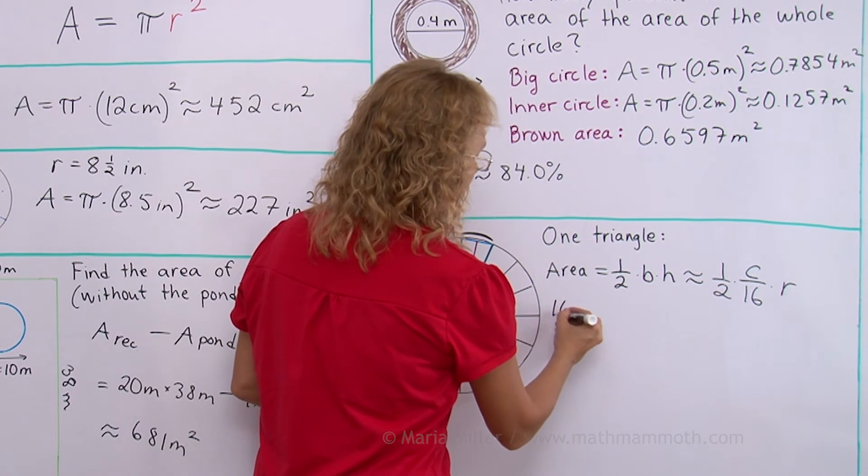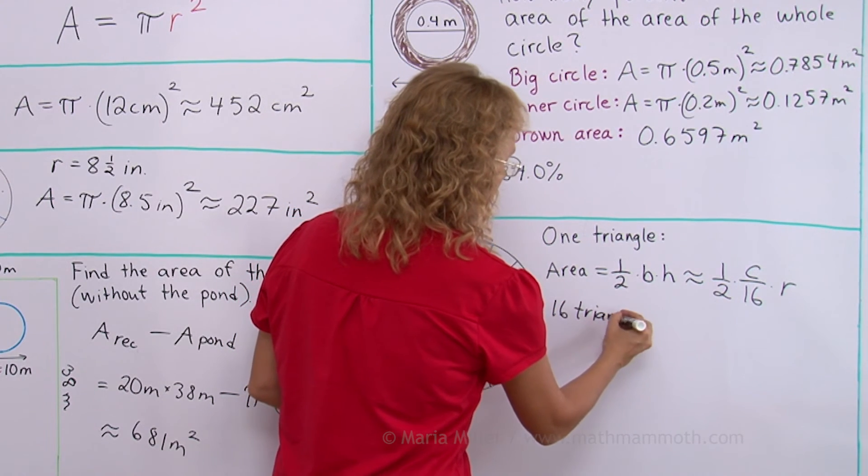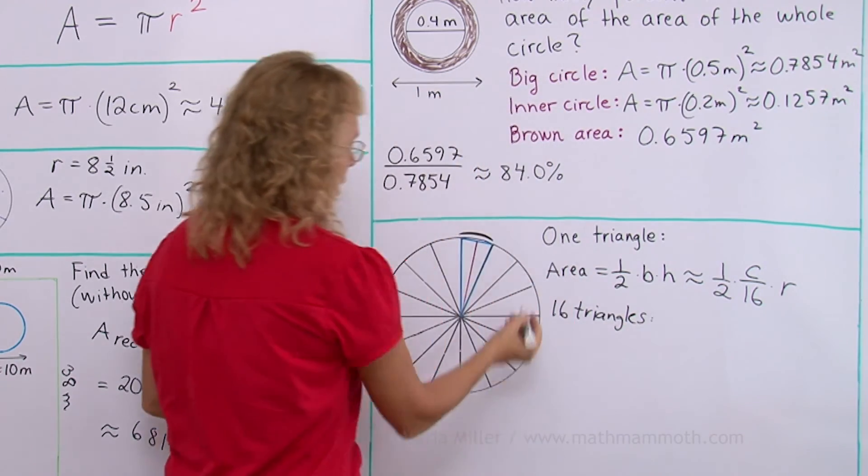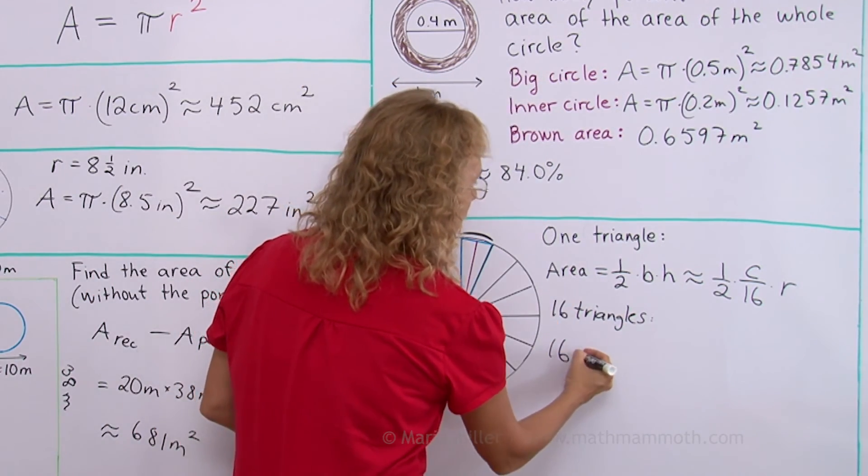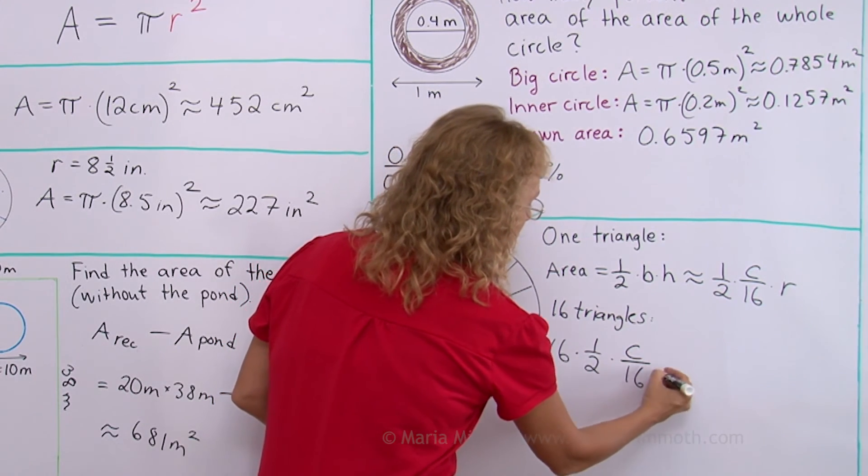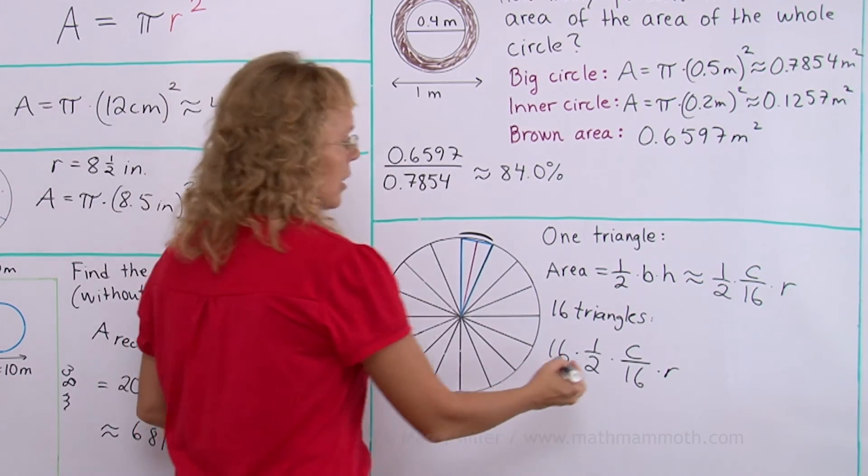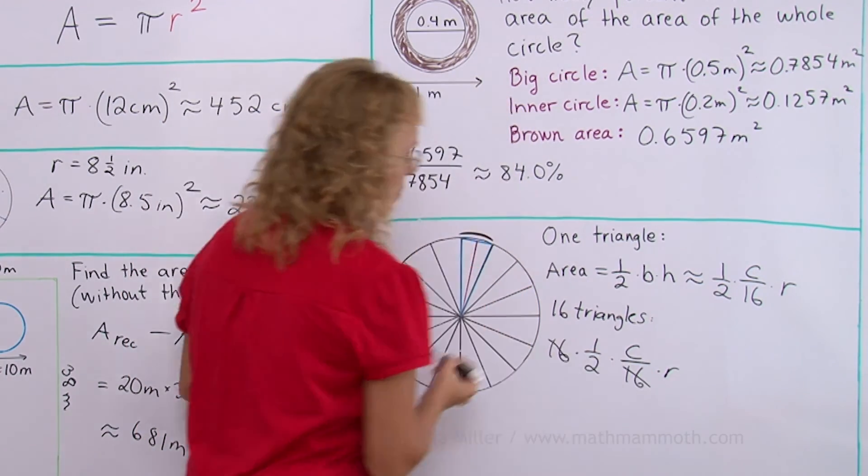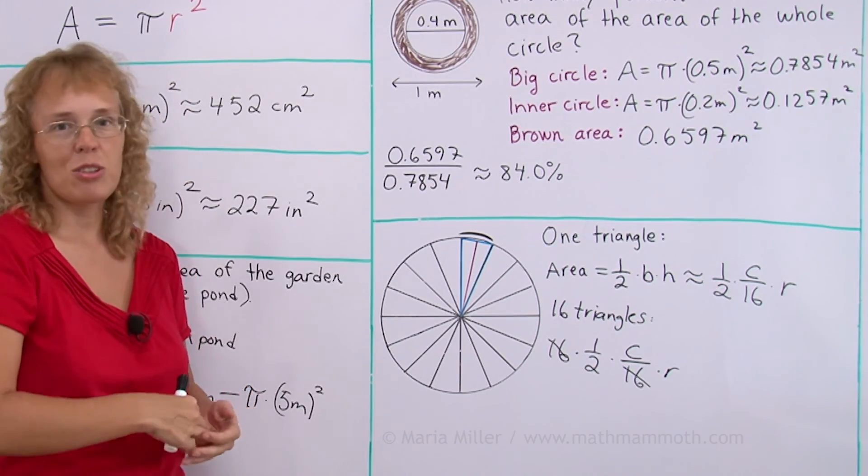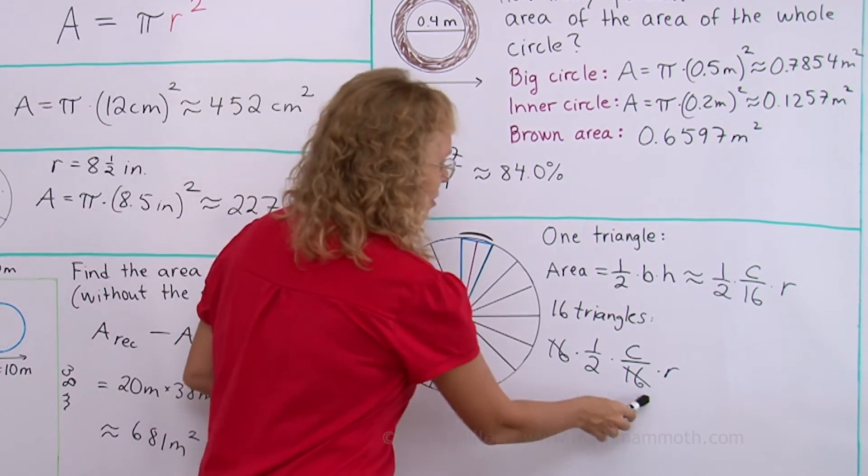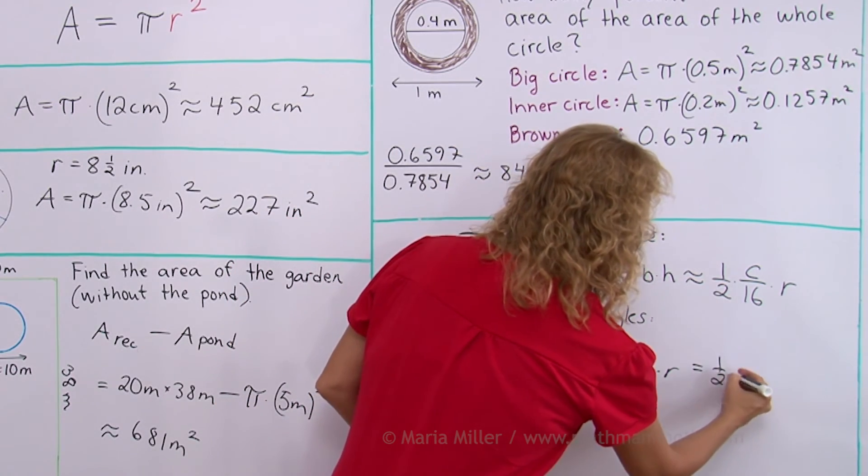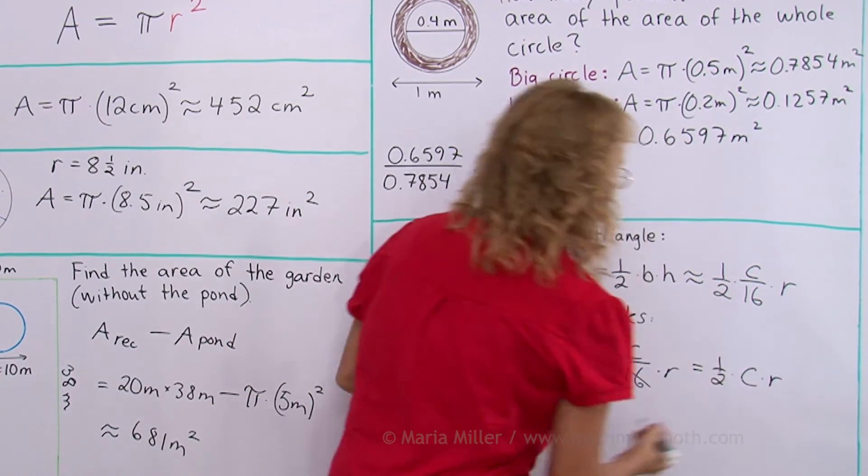Okay. And now for 16 triangles, we will take 16 times this amount. And that would be the area of the whole circle. 16 times half times circumference over 16 times radius. Now you notice the 16s cancel out. And the same would have happened if I had had 160 triangles or a million triangles. The number of triangles would have cancelled out. And then we have half times circumference times r.